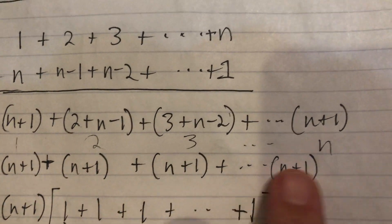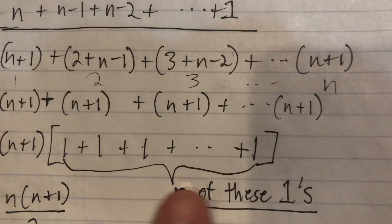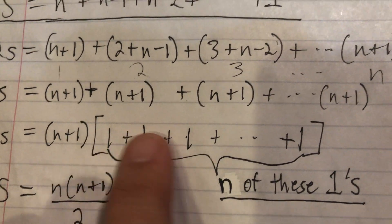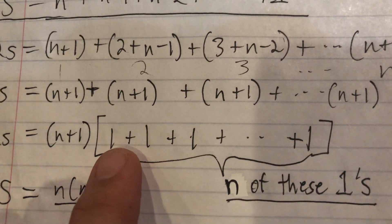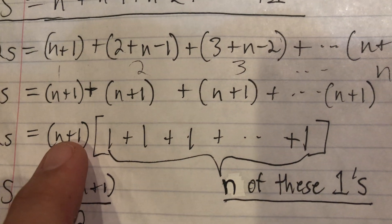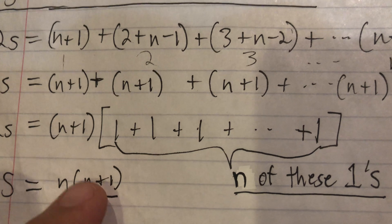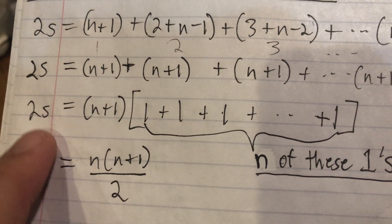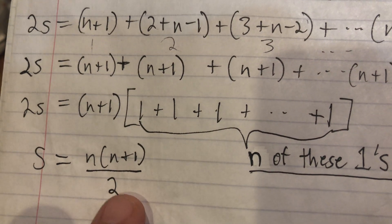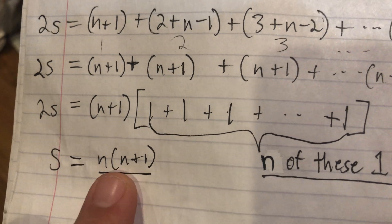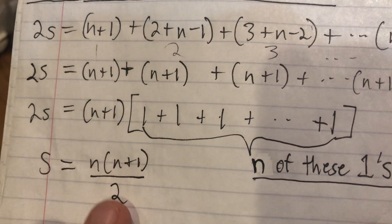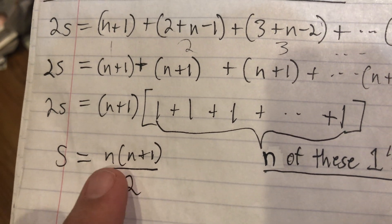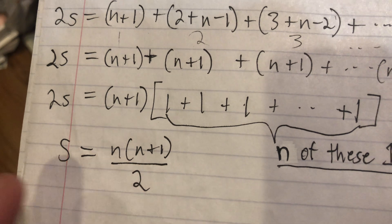All these n plus ones — how many do we have? We numbered it one through n, so once again we use our numbering to tell us how many we have. We have n of these n plus ones, so 2S equals n times n plus one, and we divide by two because we have twice as many. So S equals n times n plus one over two.